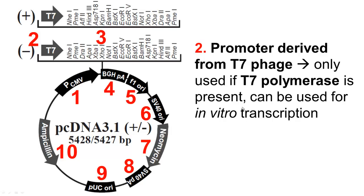Next we have number two, which is the T7 — the promoter sequence derived from the T7 bacteriophage, which is a virus that infects bacteria. This promoter is only used if you supplement the T7 polymerase in your cell culture, or you can initiate in vitro transcription in a test tube using the polymerase and other transcription factors. When talking about the context of a regular standard mammalian cell transfection, this promoter is pretty much irrelevant.